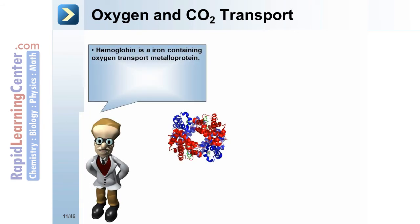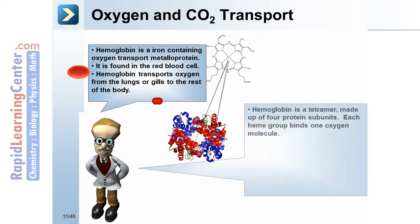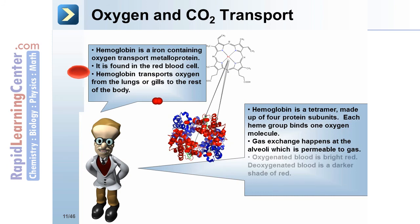Oxygen and CO2 transport: hemoglobin is an iron-containing oxygen-transport metalloprotein found in the red blood cell. Hemoglobin transports oxygen from the lungs or gills to the rest of the body. This iron-containing molecule is the heme molecule. Hemoglobin is a tetramer made up of four protein subunits, each containing the heme group. Each heme group binds one oxygen molecule. Gas exchange happens at the alveoli, which is permeable to gas. Oxygenated blood is bright red; deoxygenated blood is a darker shade of red.